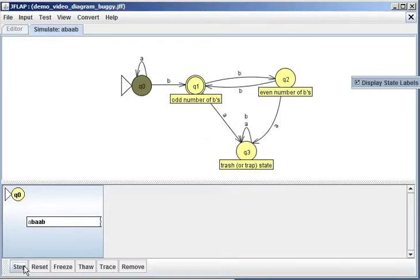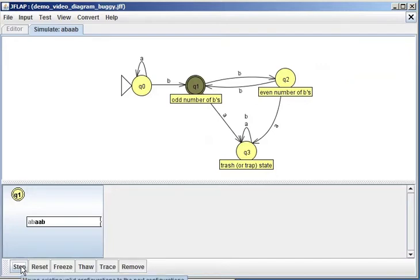And as we step through it, we have an A, then we go past, we process the B, we process the A, we process the A, we process the B.